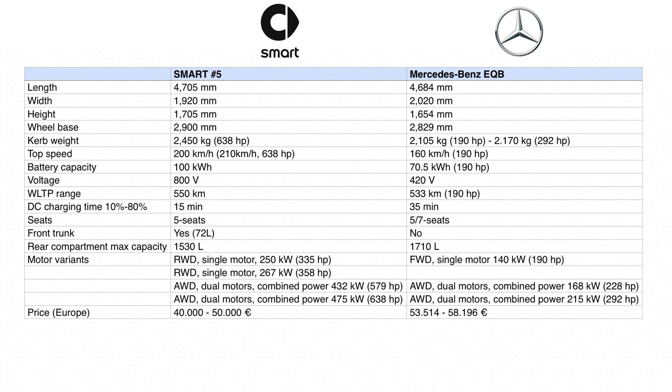Top speed is 200 km/h for the Smart #5 and 160 km/h for the Mercedes EQB. Smart uses 800-volt architecture and Mercedes uses 420-volt architecture, which means that DC fast charging time will be much faster in the Smart #5 compared to the Mercedes EQB.